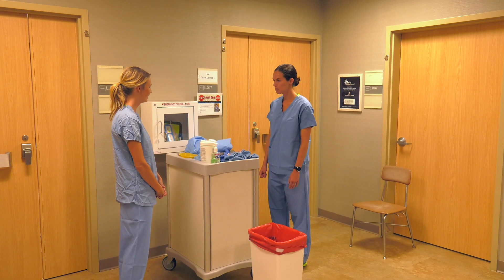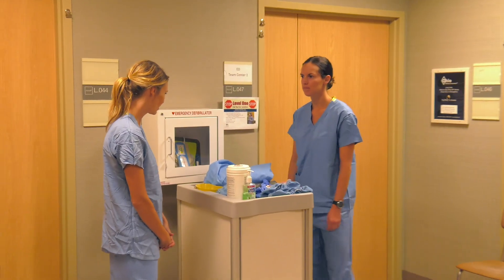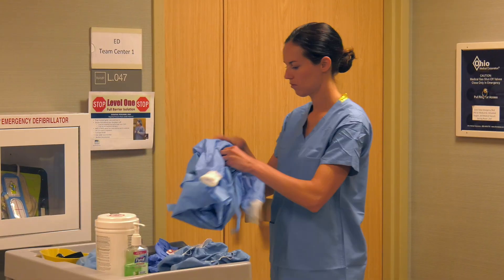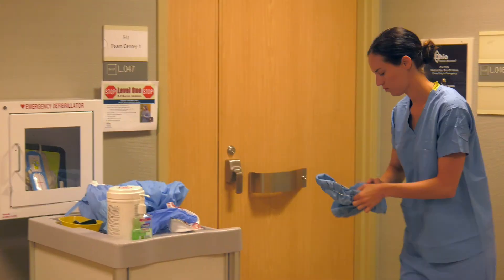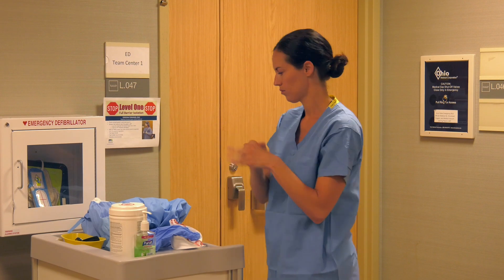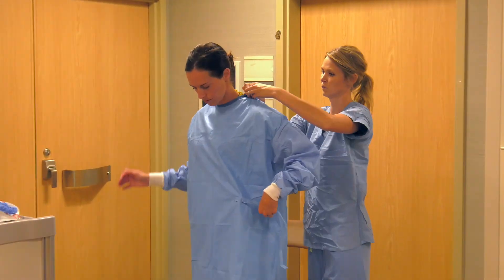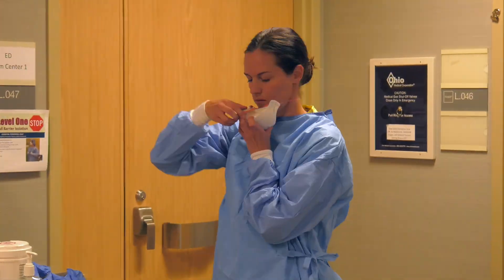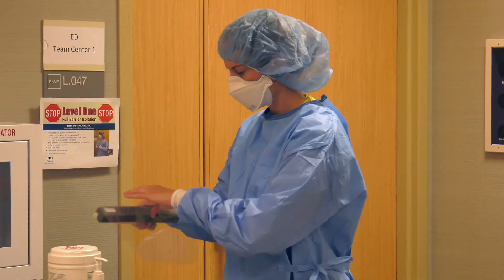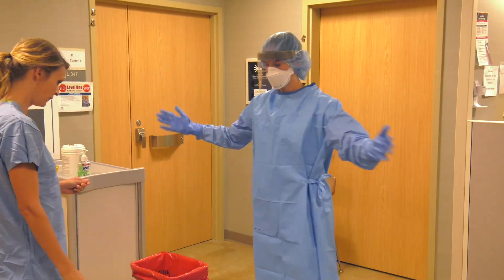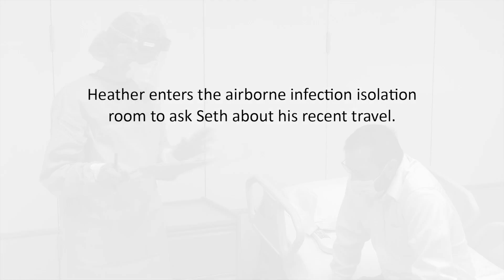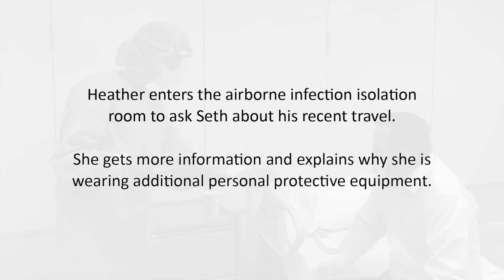Hey Angie, will you help me don this PPE? It's kind of confusing, a lot of steps. Yeah, of course. Heather and Angie are following the level one full barrier isolation sign outside of the patient's room to don the appropriate personal protective equipment. Heather will use a fit-tested N95 respirator and only one pair of extended cuff gloves because she suspects a viral respiratory pathogen. Heather enters the airborne infection isolation room to ask Seth about his recent travel. She gets more information and explains why she is wearing additional personal protective equipment. She assures Seth that he is fine and he will be well taken care of.